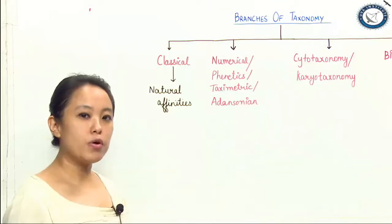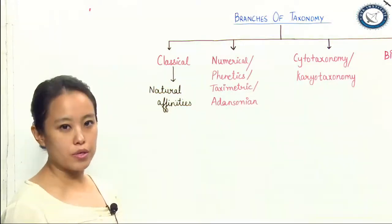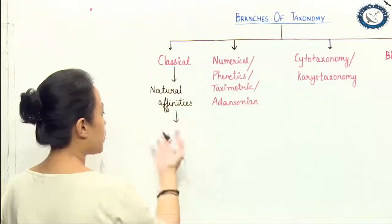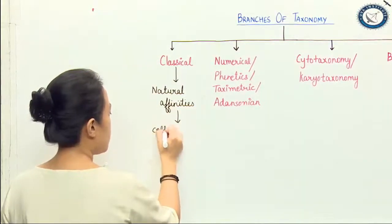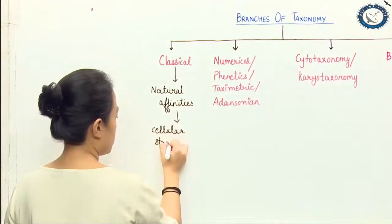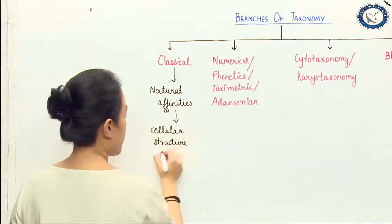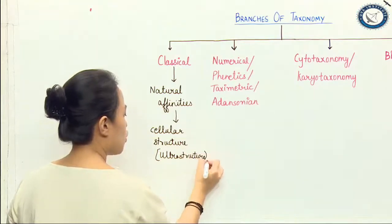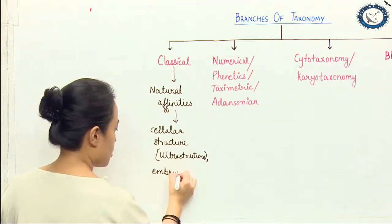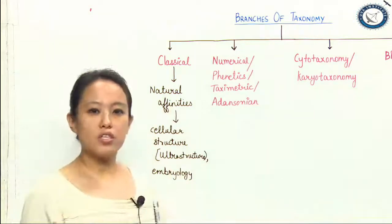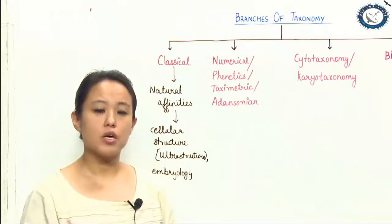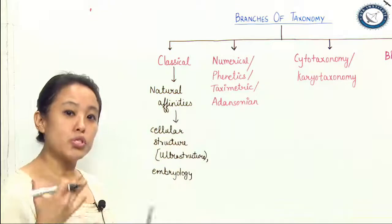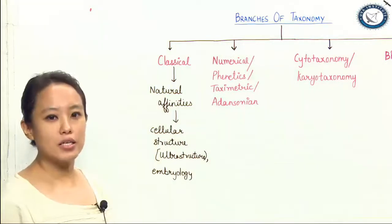In order to understand more about natural affinities, you need to go back and see the evolutionary history. Natural affinities means an organism can be studied on the basis of cellular structure — which we conclude as ultrastructure — and on the basis of embryological evidences. All the information given by Aristotle, Theophrastus, and even Carolus Linnaeus has been concluded together in the form of natural affinities, and the branch that deals with it is known as classical taxonomy.